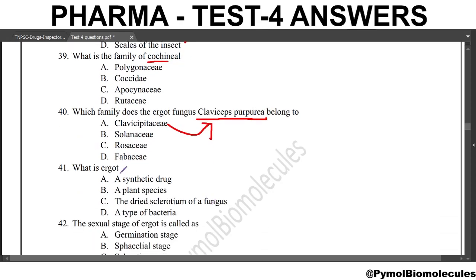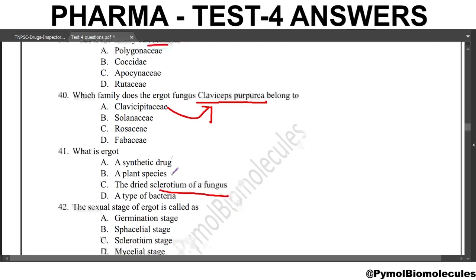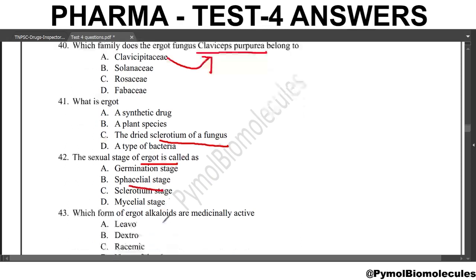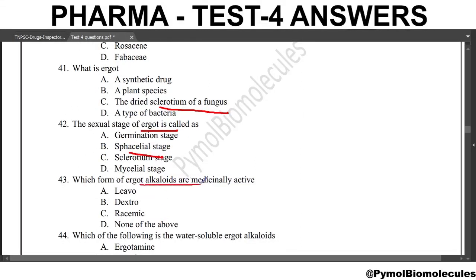Next question: what is ergot? Ergot is the dried sclerotium of a fungus. The sexual stage of ergot is called the sphacelial stage. Next question: which form of ergot alkaloids are medicinally active? The answer is levo. The levo ergot alkaloids are the medicinally active ones.